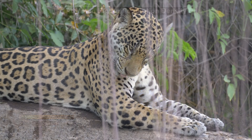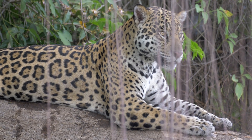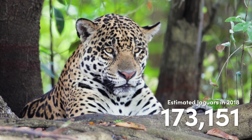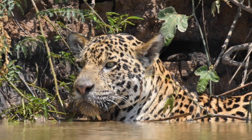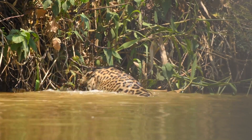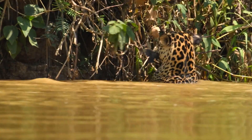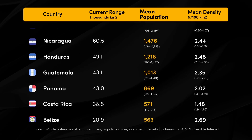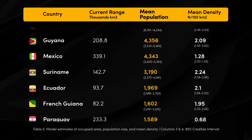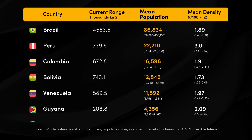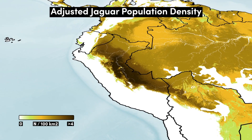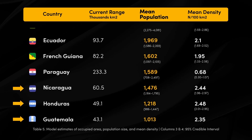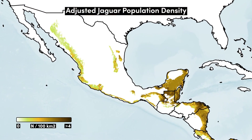In terms of total numbers, the researchers estimated within a reasonable degree of error that the total number of jaguars is 173,151. They noted that this estimate may be considered high by other researchers, which they attributed to the high probabilities of jaguar occurrence and moderate to high densities in the Amazon. In terms of individual countries, the highest number of jaguars by far are likely found in Brazil at 87,000, followed by Peru with 22,000, which experiences the highest mean density in its portion of the Amazon. The countries of Central America generally exhibit lower population estimates, with the highest numbers found in Mexico at 4,300.